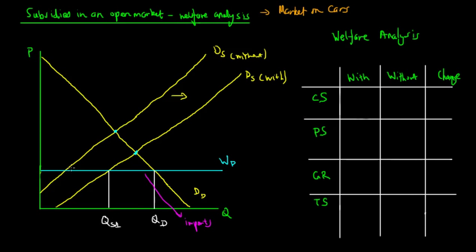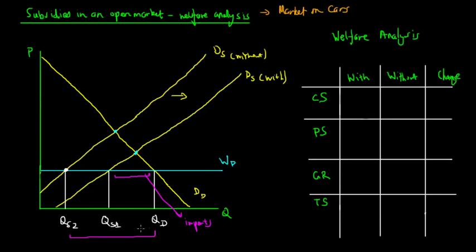Without the subsidy, the world price intersects the domestic supply curve at a lower point, which we call QS2. Domestic demand stays the same at this world price, but domestic supply decreases. As a result, imports increase by the difference between QS2 and QS1.